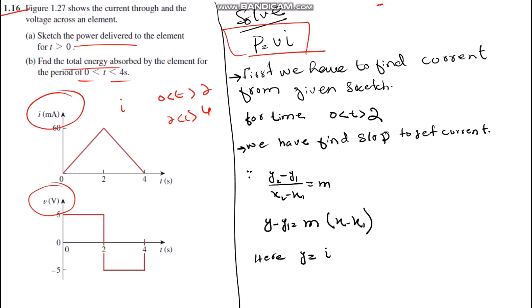When we get the current from the slope equation, we will substitute it into the power equation. The voltage is constant at 5 volts from 0 to 2 seconds and then negative 5 volts from 2 to 4 seconds.